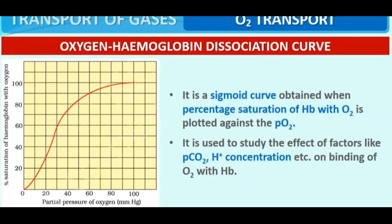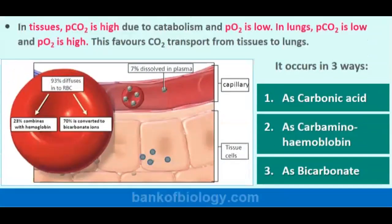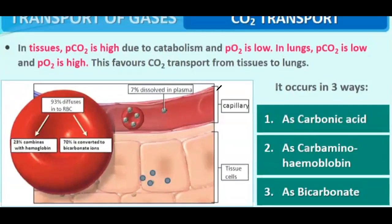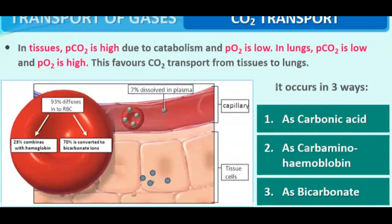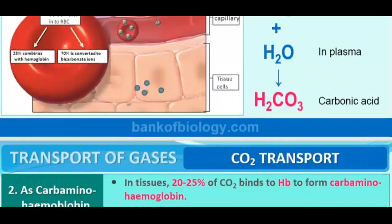Now let us talk about carbon dioxide transport. In tissues, pCO2 is high due to catabolism and pO2 is low. In lungs, pCO2 is low and pO2 is high. This favors CO2 transport from tissues to the lungs. Carbon dioxide is transported in three ways: as carbonic acid, as carbaminohemoglobin, and as bicarbonate ions.